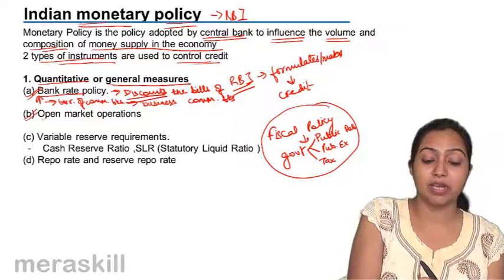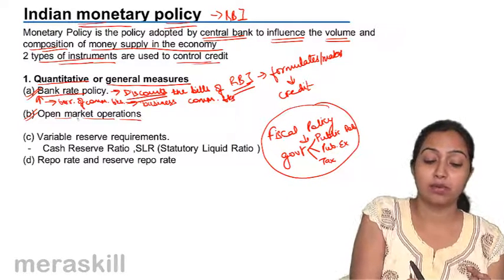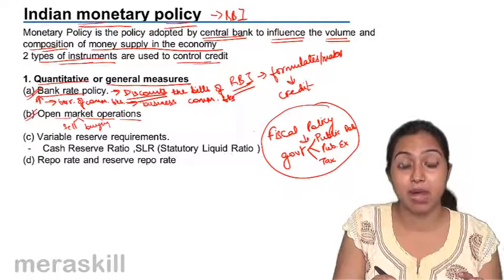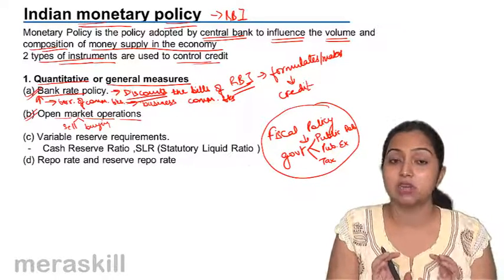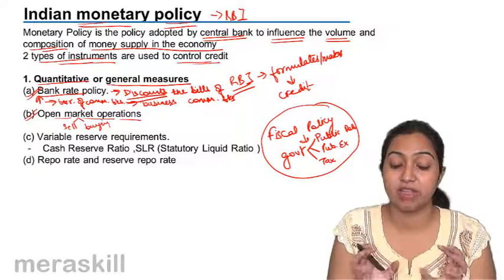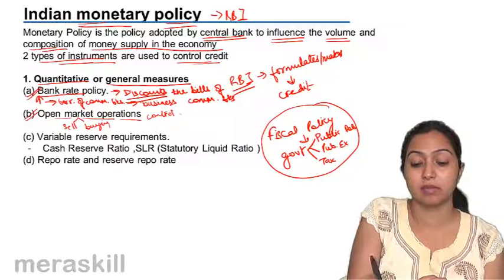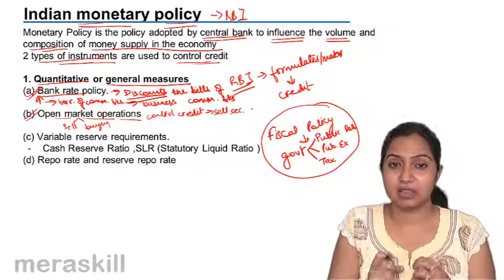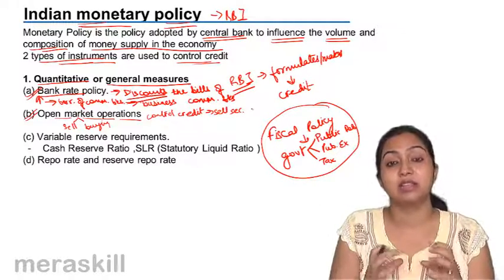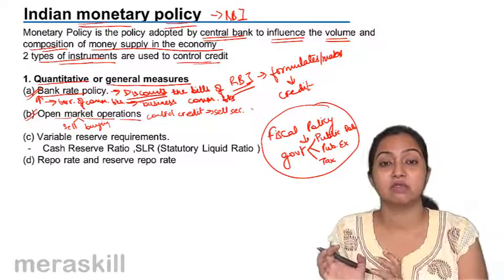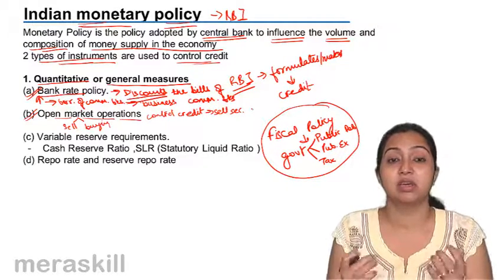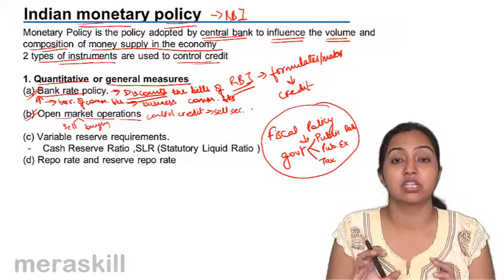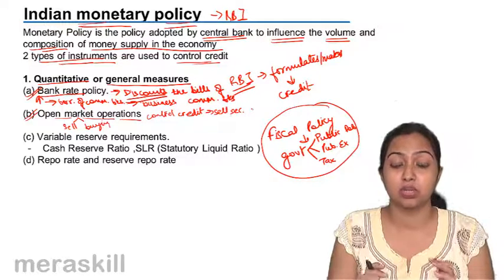Second is open market operations. Open market operations are the selling and buying of securities. RBI is not dealing with the public — it deals with commercial banks. When they want to control credit, they sell securities. When they sell, they take money from commercial banks, reducing their money supply. The commercial banks have less money to lend, interest rates go up, people borrow less, invest less, and production, income, and demand come down.